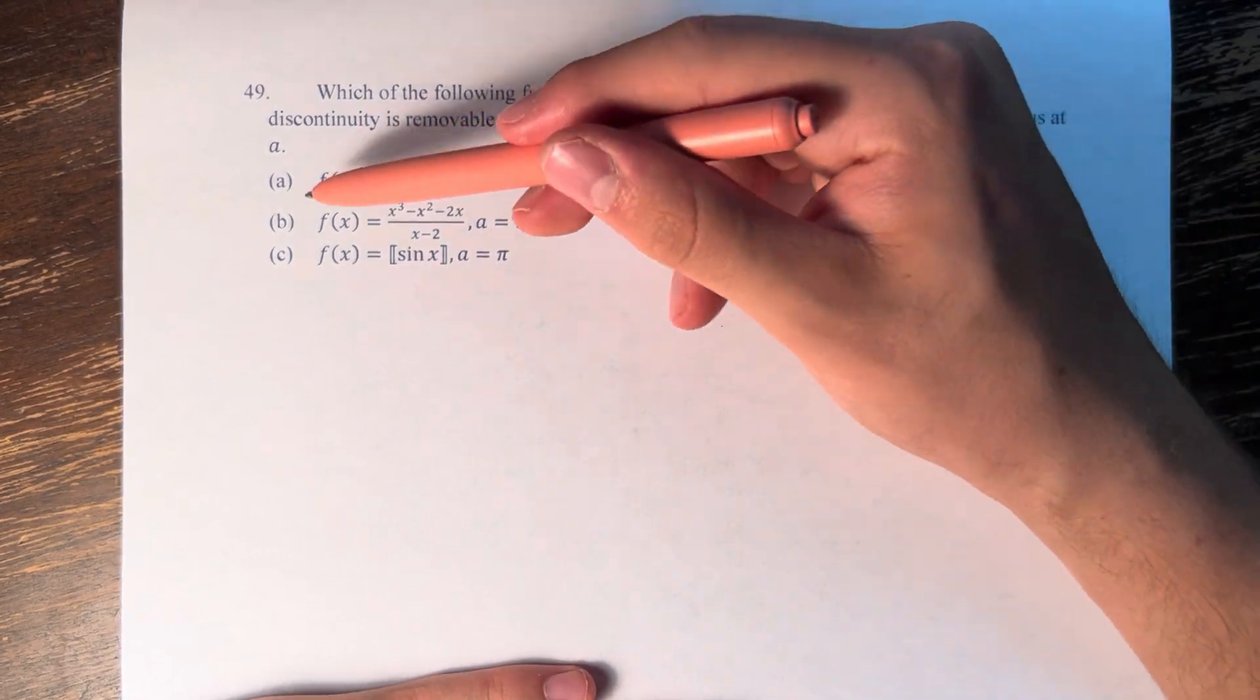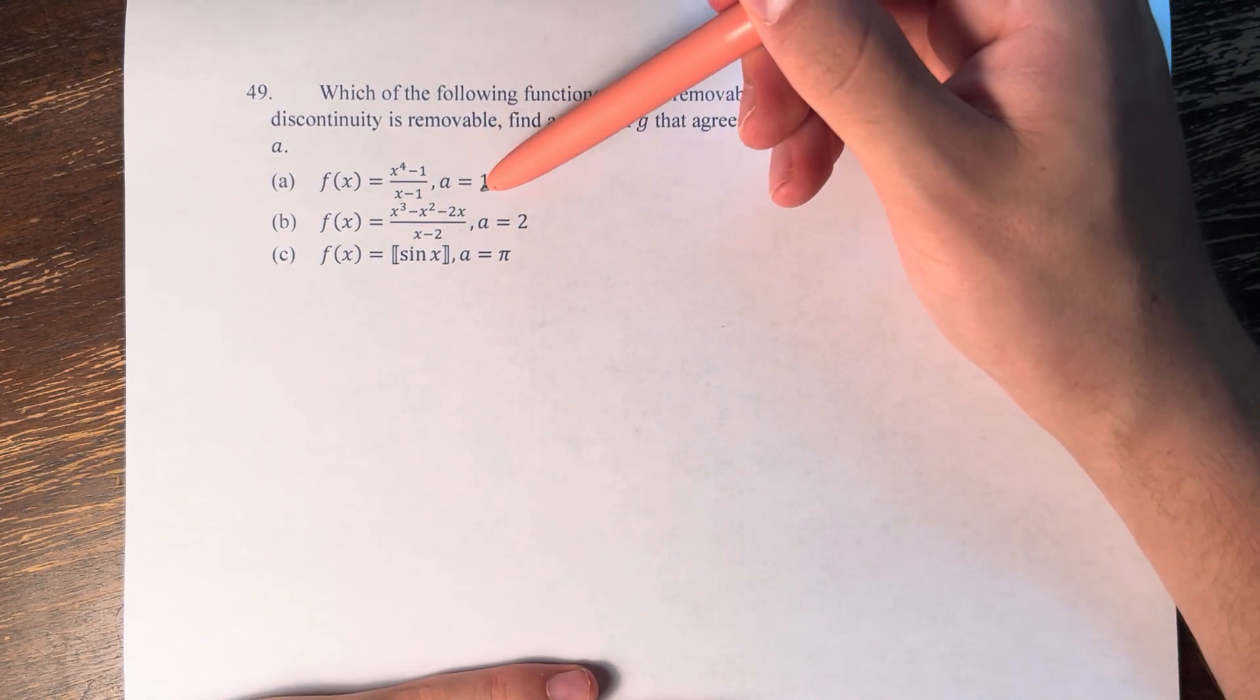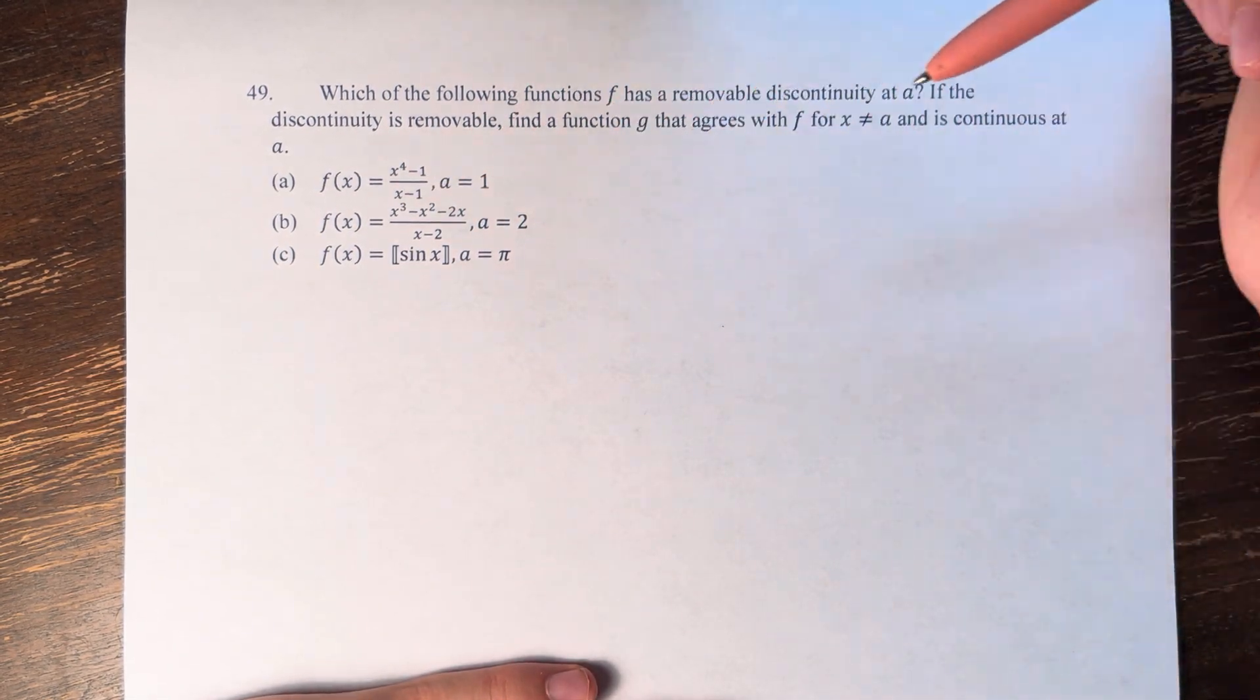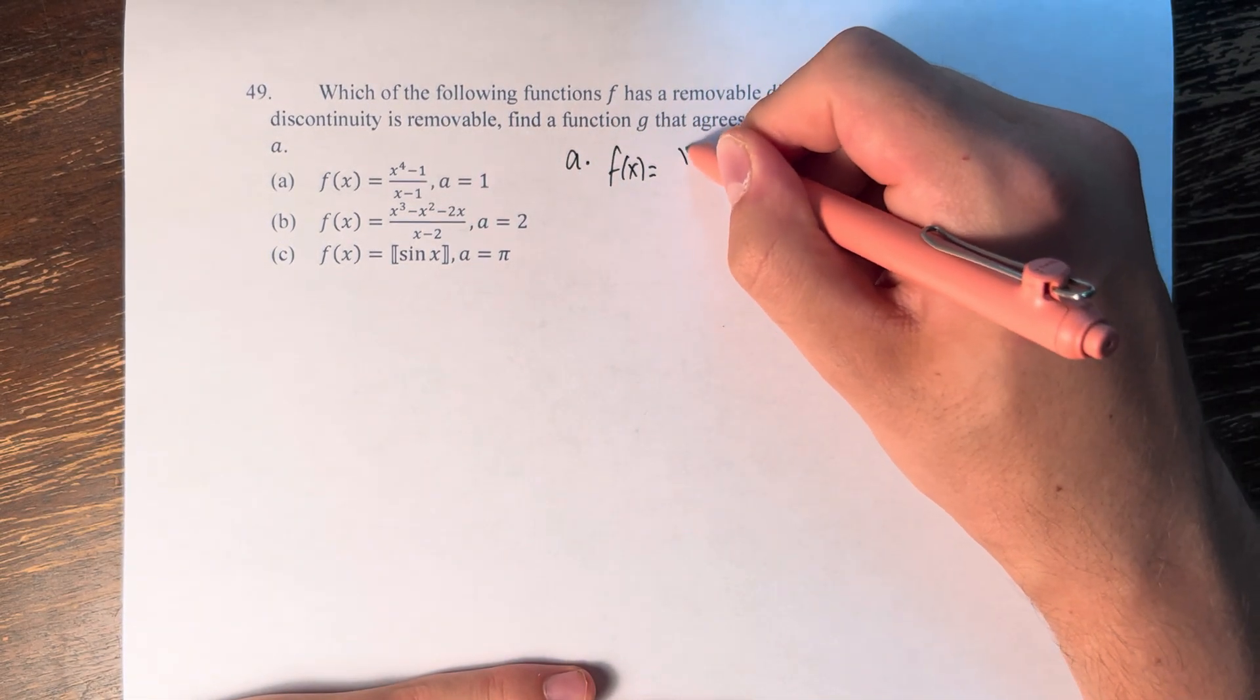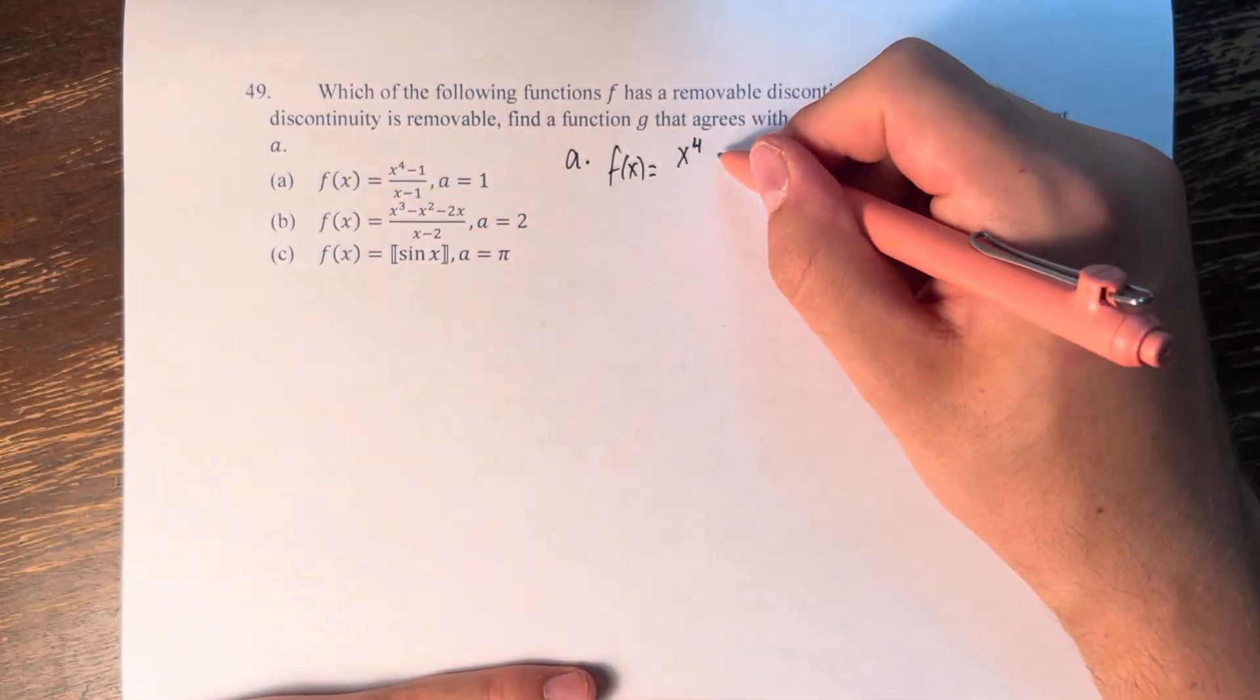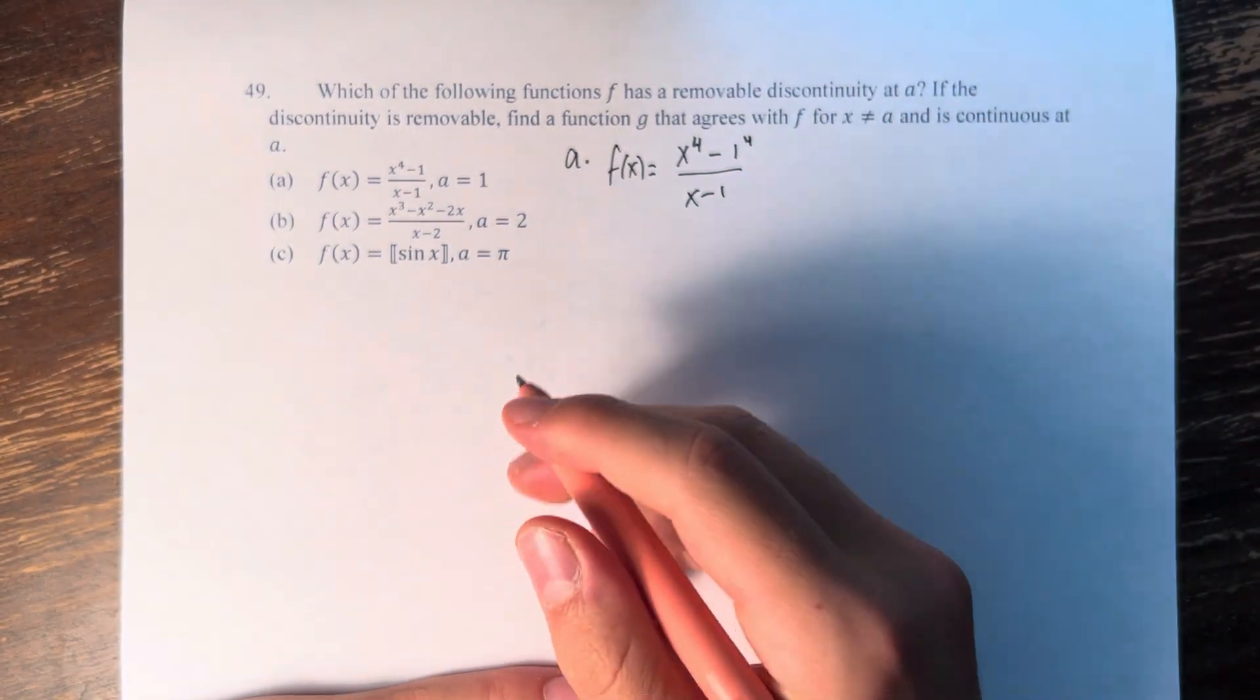So, for example, we have f of x is equal to x to the fourth minus 1 over x minus 1. And if we plug in a value of 1, you'll see we're dividing by 0. So what we have to do here is take our function, x to the fourth minus 1 over x minus 1.